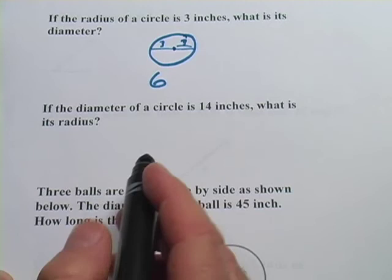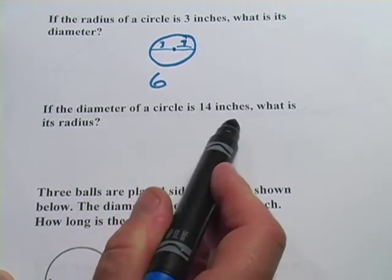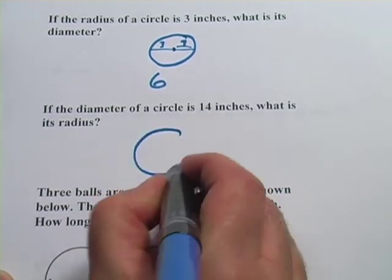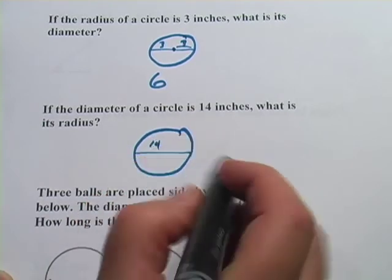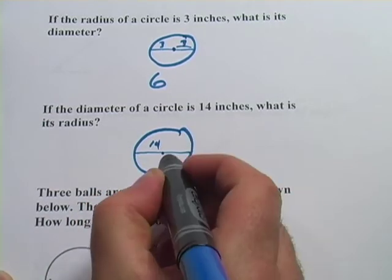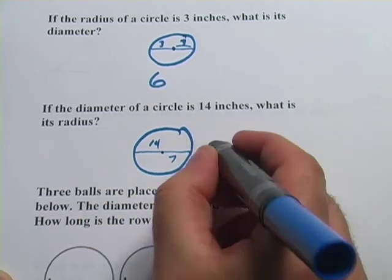This next one says, if the diameter of the circle is 14 inches, what is the radius? Well, that's kind of the opposite of what we just did. The whole length is 14. A radius is half of that. So that would be 7. So 7 inches.